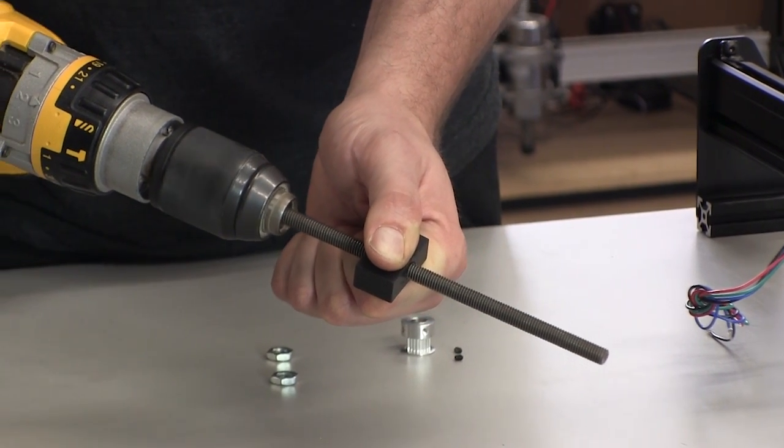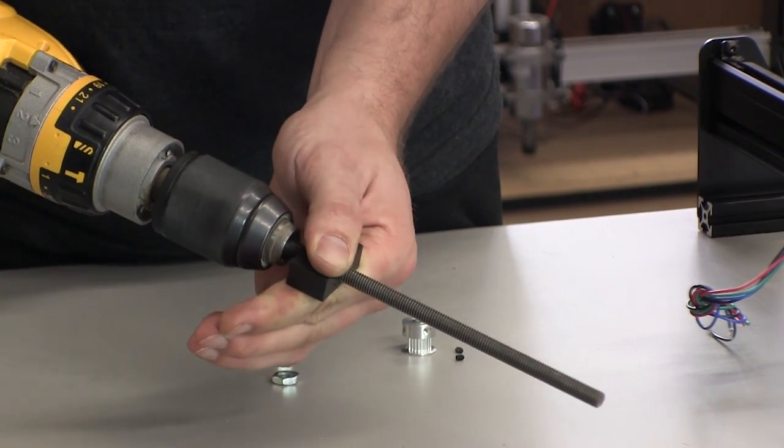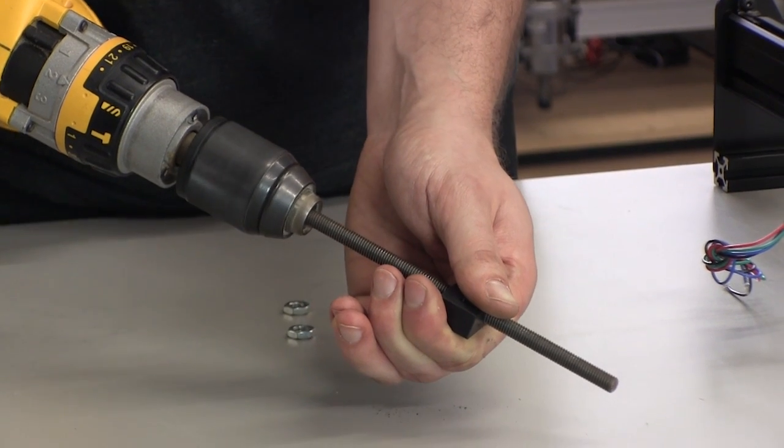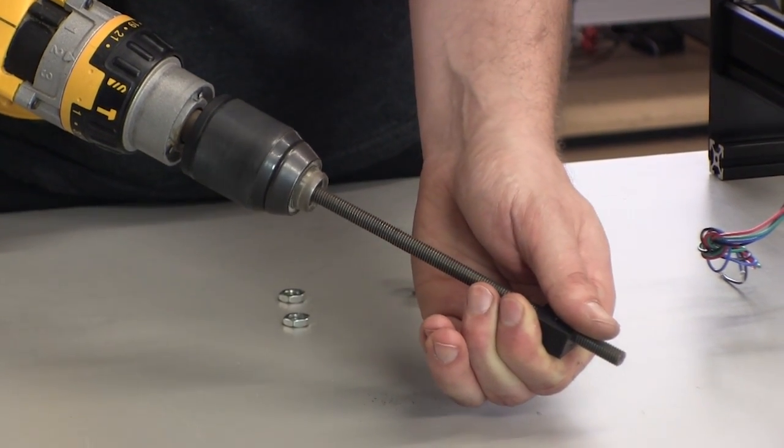If you have a drill handy, you can do this very easily by sticking the threaded rod into the chuck of the drill and spinning the nut up and down the rod.